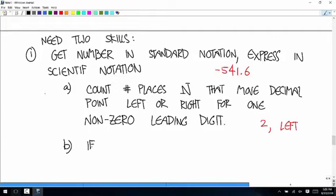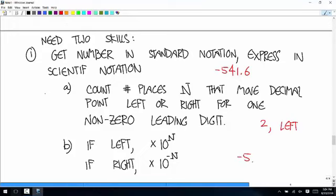And then if you moved it to the left, you're going to multiply by times 10 to the positive n. If you had to move it to the right, you're going to multiply by 10 to the negative n. In our case we had to move it to the left so we're going to have negative 5.416 times 10 to the positive 2. Any questions about that?